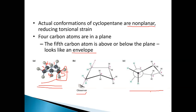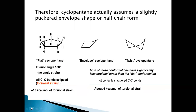When you look at this Newman projection formula you can understand it better. Here C1, C2, C3, C4, and C5 — the C5 is out of the plane but the other four carbon atoms are in the plane, and there is a certain amount of torsional strain present. So cyclopentane assumes an envelope form or half-chair form in order to reduce the torsional strain present in the planar cyclopentane. In the envelope form, all four carbon atoms are in one plane and one carbon atom is above the plane of the molecule.